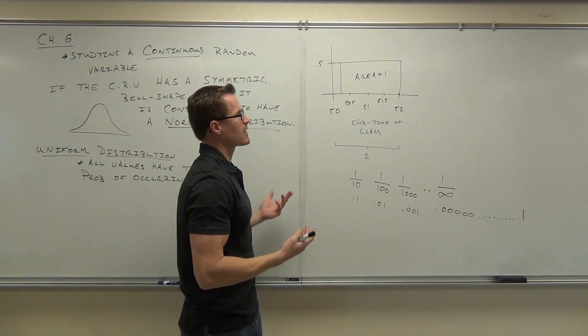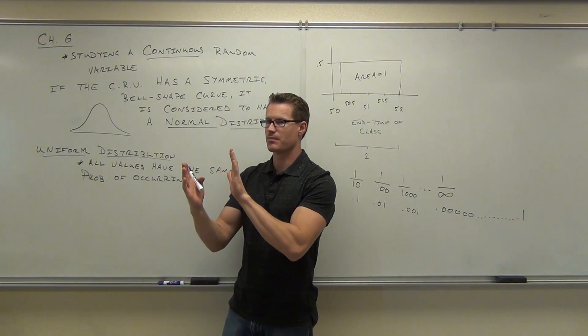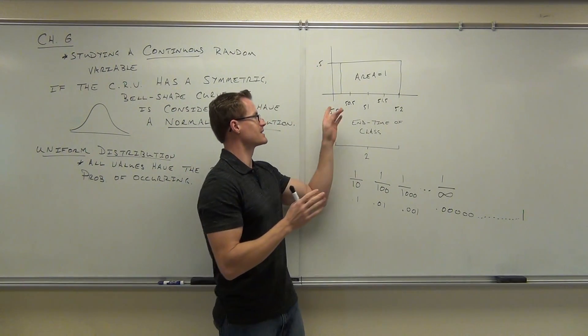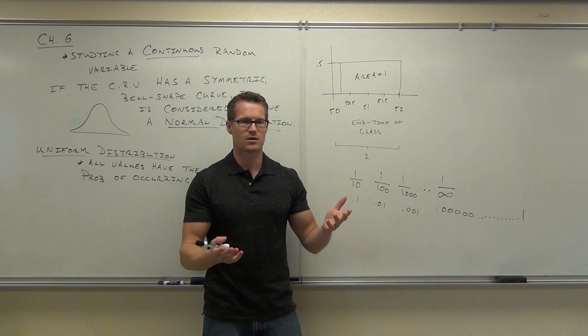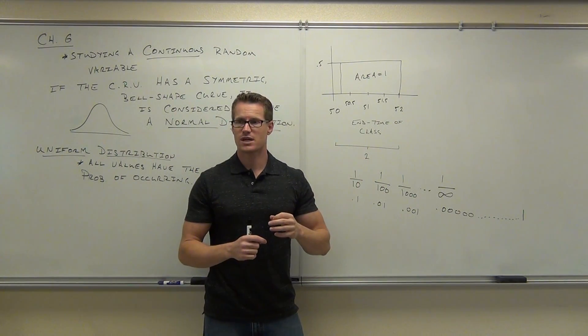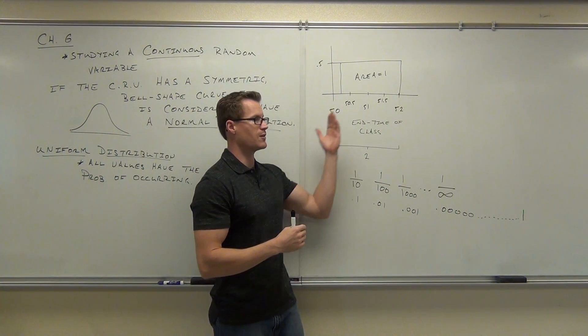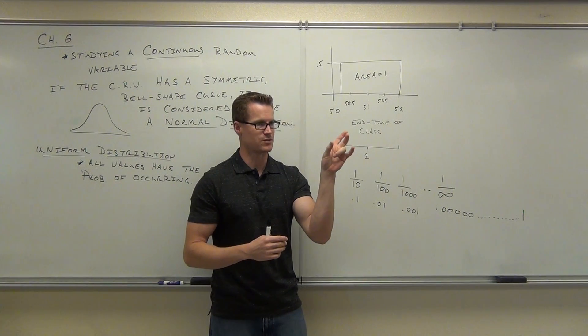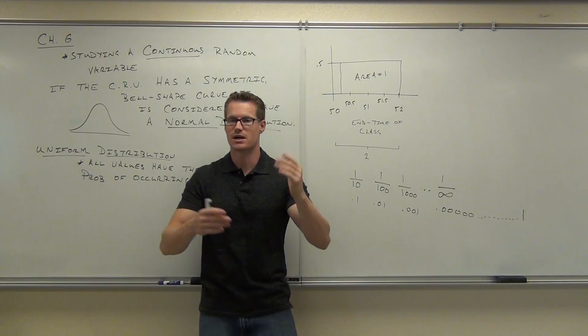So instead of actually looking for one time, what you have to say is, I'm going to look at a range of times. What's the probability, instead of ending at exactly 50.432789 seconds, or minutes, we're going to say, what's the probability that this class is going to end somewhere between 50 minutes and 50.5 minutes? You have to give a range of numbers, because one specific one doesn't even calculate. You get 0 every time.